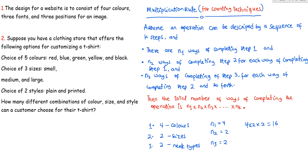Now let's look at example one. The design for a website is to consist of four colors, three fonts, and three positions for an image. We are designing a website — that's the operation. We have three steps: the first step is for colors, the second step is for fonts, and the third step is to choose a position for an image.